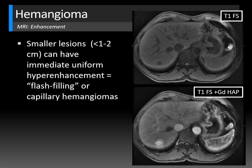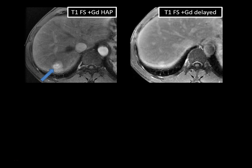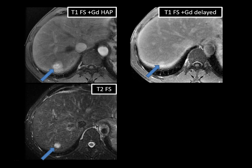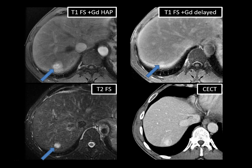The flash filling or capillary hemangioma pattern looks similar on MRI. A T1 fat-suppressed image shows the T1 hypointense hemangioma immediately filling diffusely on the hepatic arterial phase — the aorta is very bright, the spleen shows arciform enhancement, and the hepatic veins are not yet enhancing, confirming arterial phase. On the delayed phase, the lesion still shows persistent enhancement typical for hemangioma and is T2 bright relative to the spleen. The correlative CT scan confirms homogeneous enhancement.